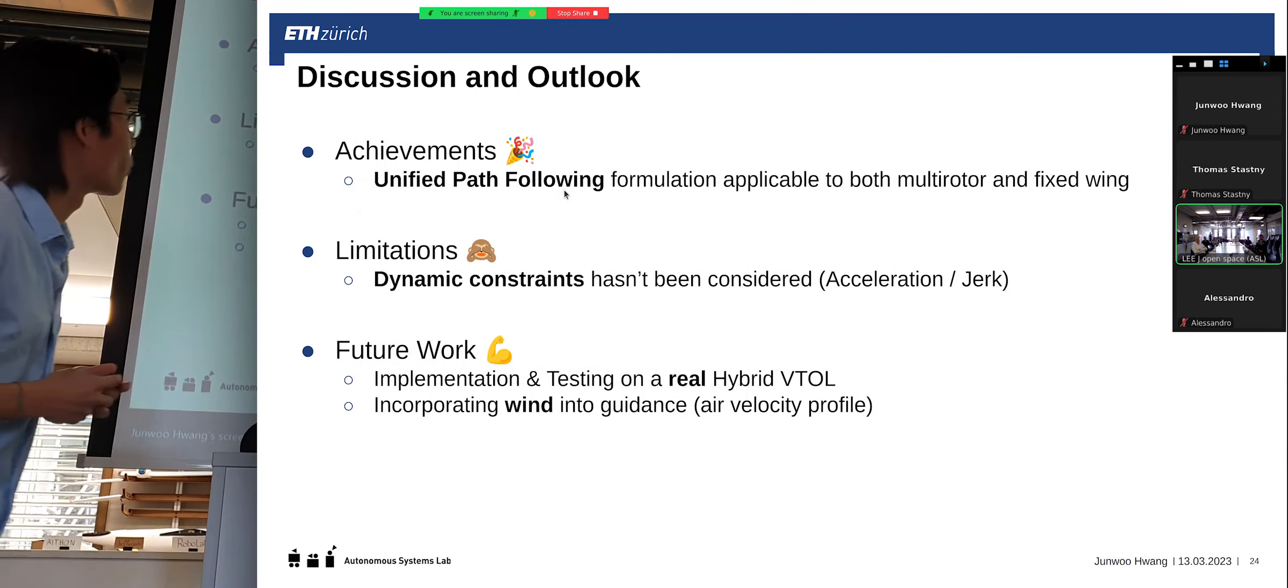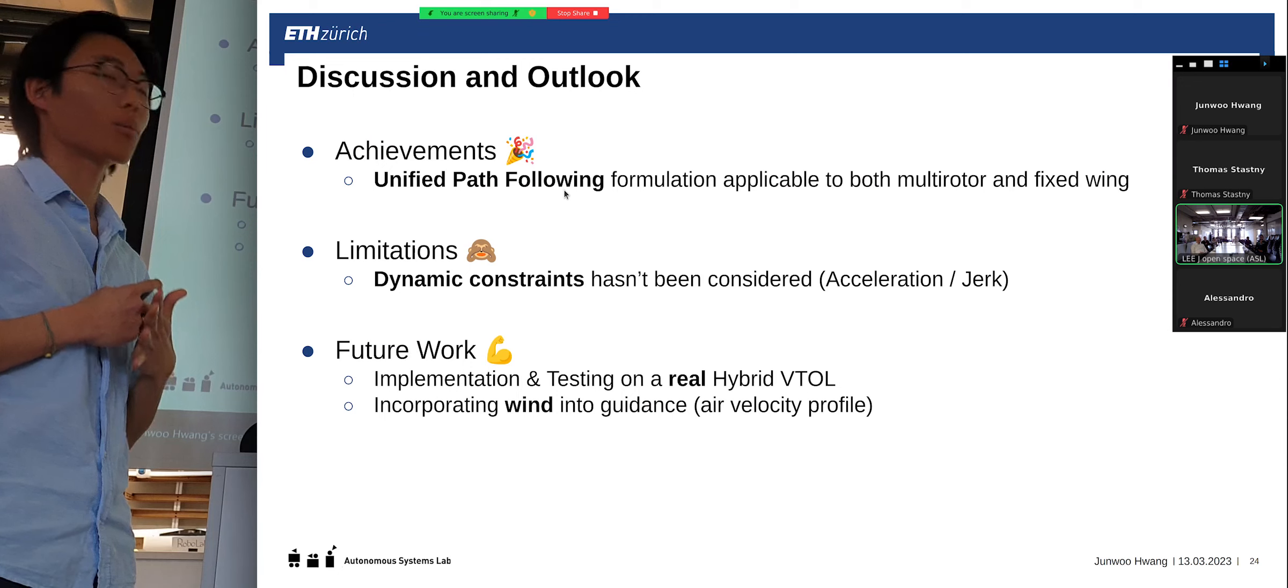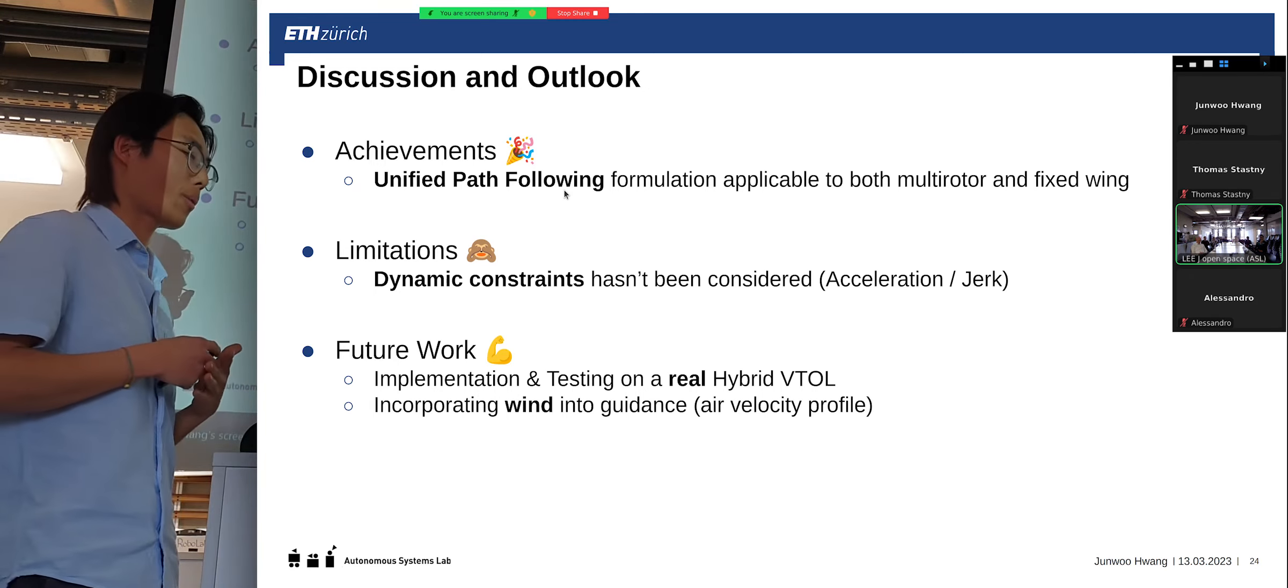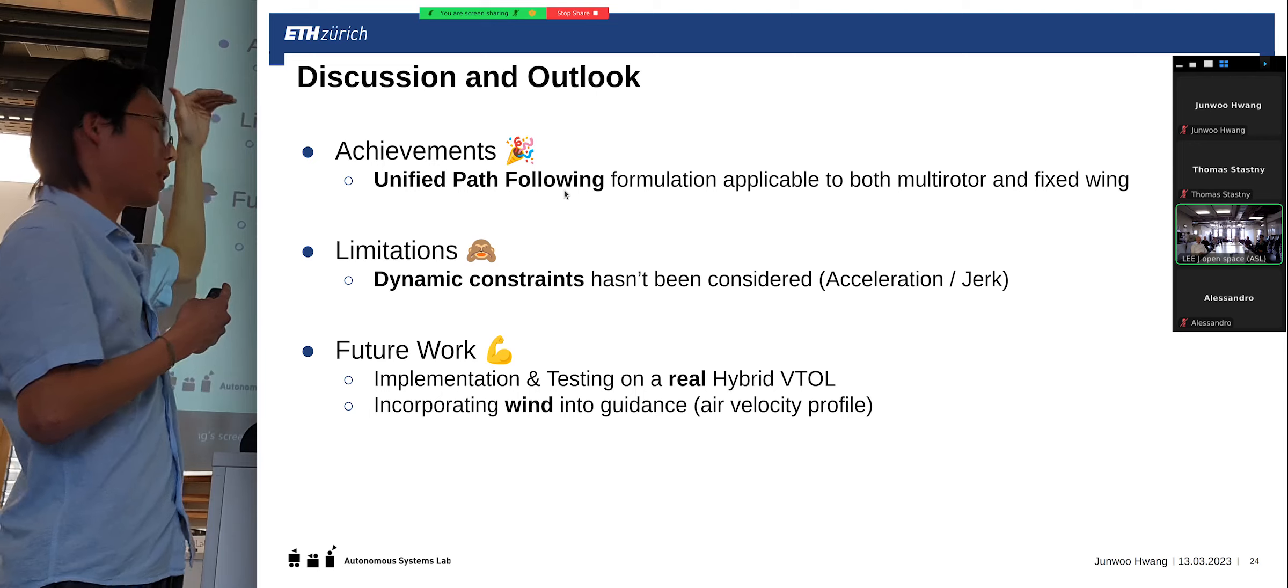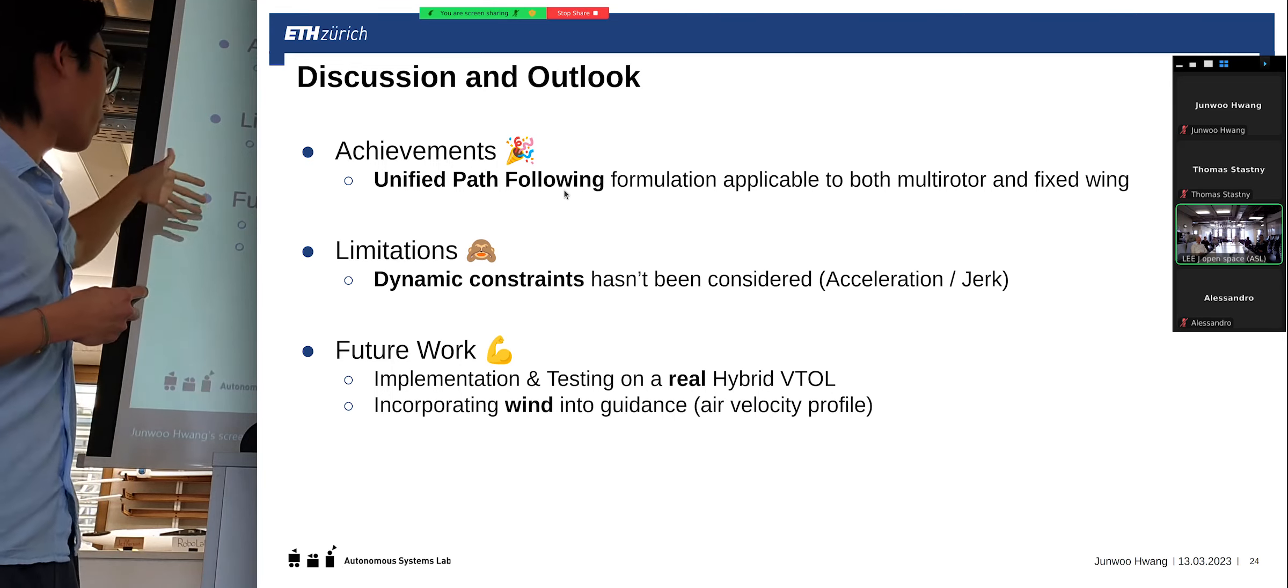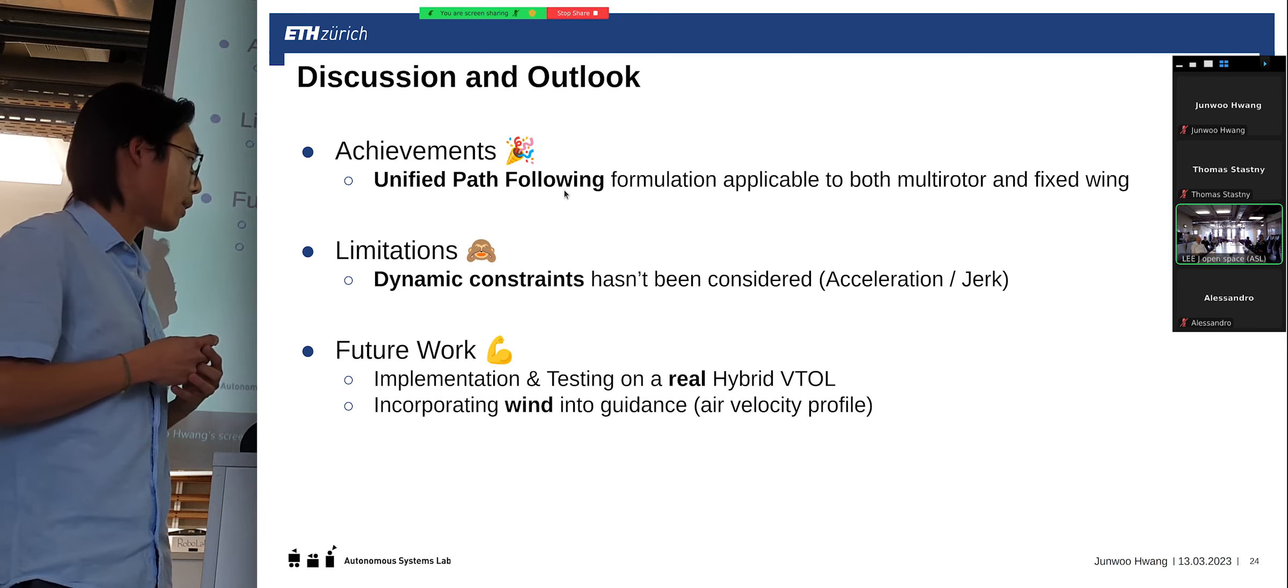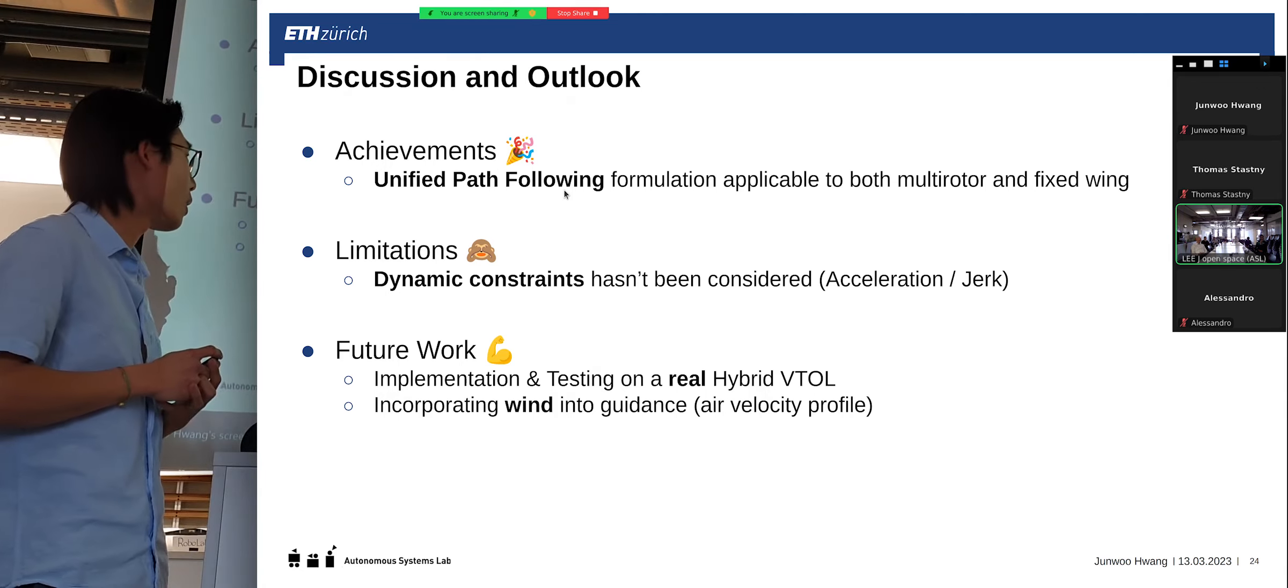So, I'd like to discuss what are the achievements, limitations, and future work. First, the unified path parallel correlation that is applicable to multirotor and fixed-wing has been formulated. However, the dynamic constraints hasn't been considered, which I can go further as an extra slide. Basically, the acceleration and jerk limits are not considered in this thesis, therefore, that severely limits the implication. But, however, from this current state of thesis, we can implement and test on a real hybrid VTOL, which is the future plan, and then incorporating wind into the thesis, thus extending it to more excessive wind cases, is future work that can be done.